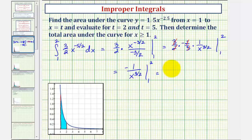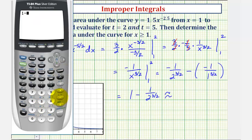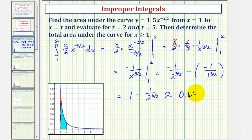When x is two, we have negative one divided by two to the three halves, minus when x is one, we have negative one divided by one to the three halves. Notice that one to the three halves is one, so we have minus negative one, which becomes positive one. So the exact value is one minus one divided by two to the three halves. The approximate decimal value is 0.6464, which is the approximate area of the shaded region.